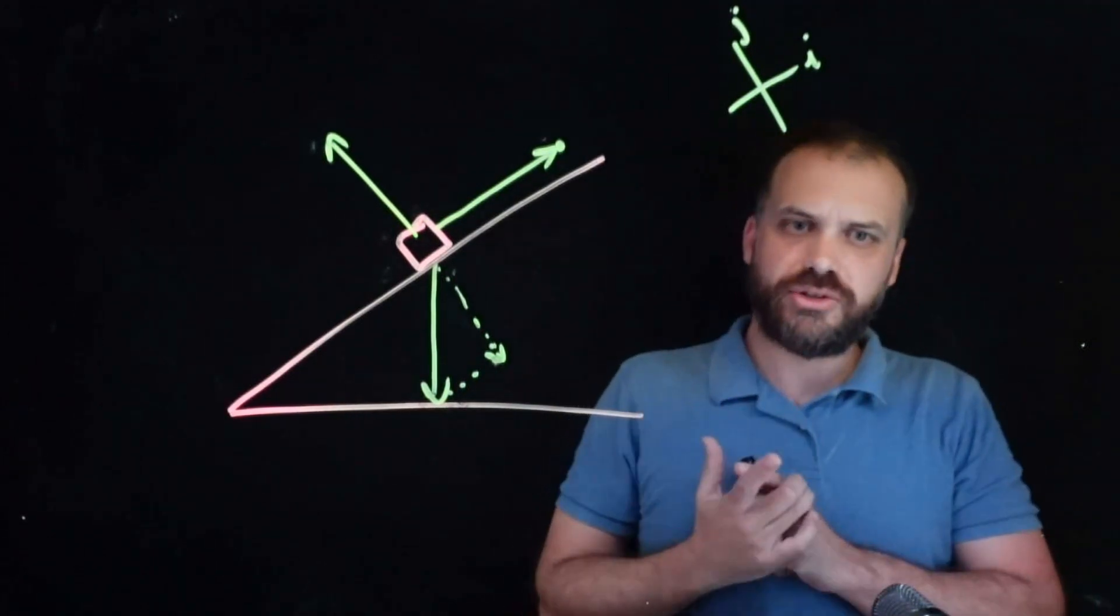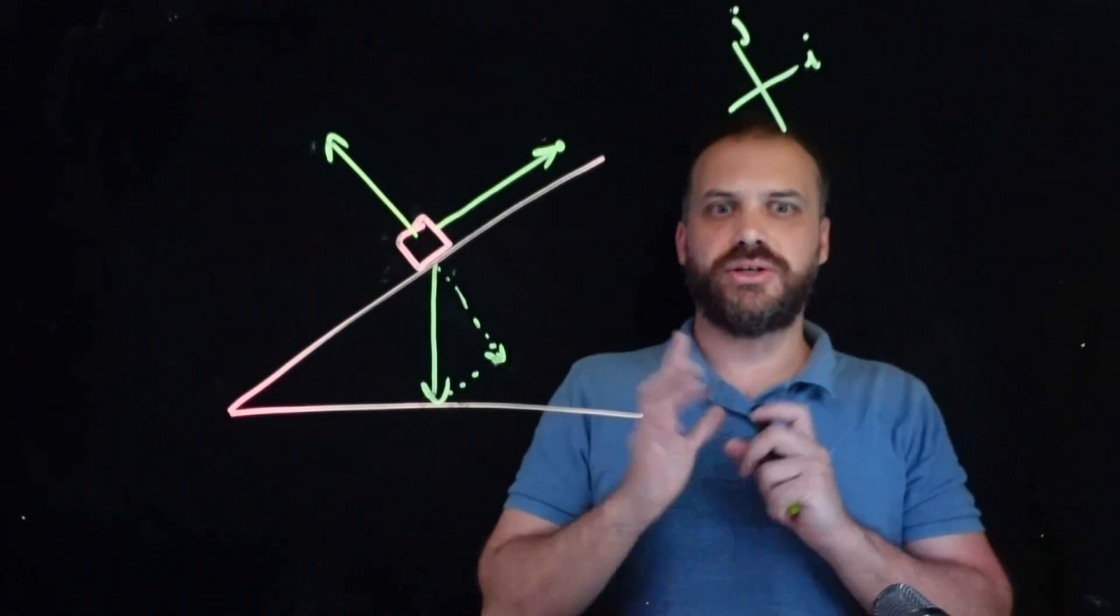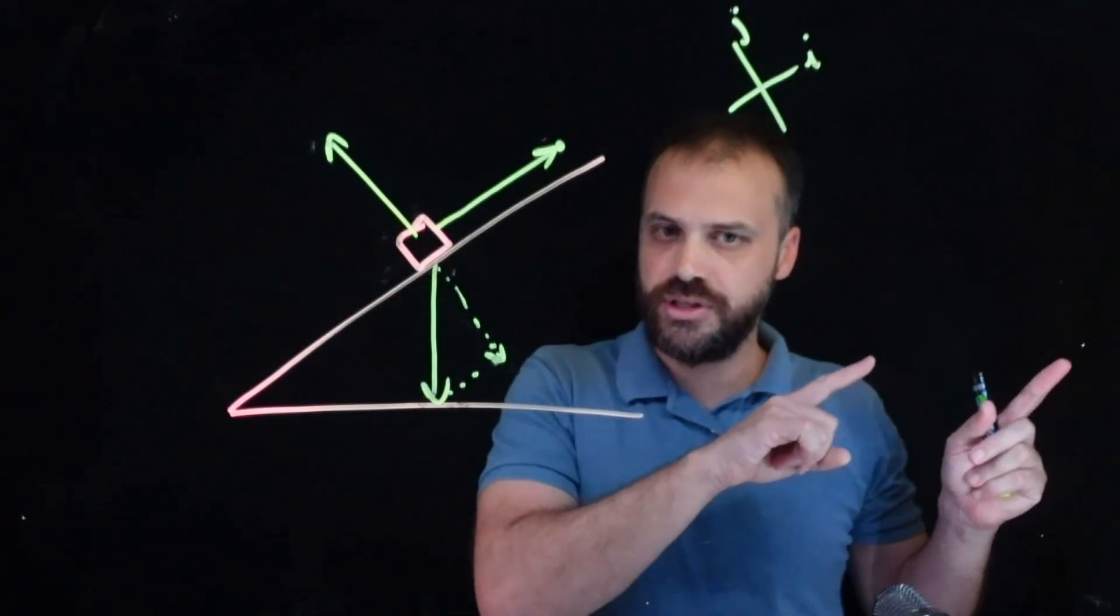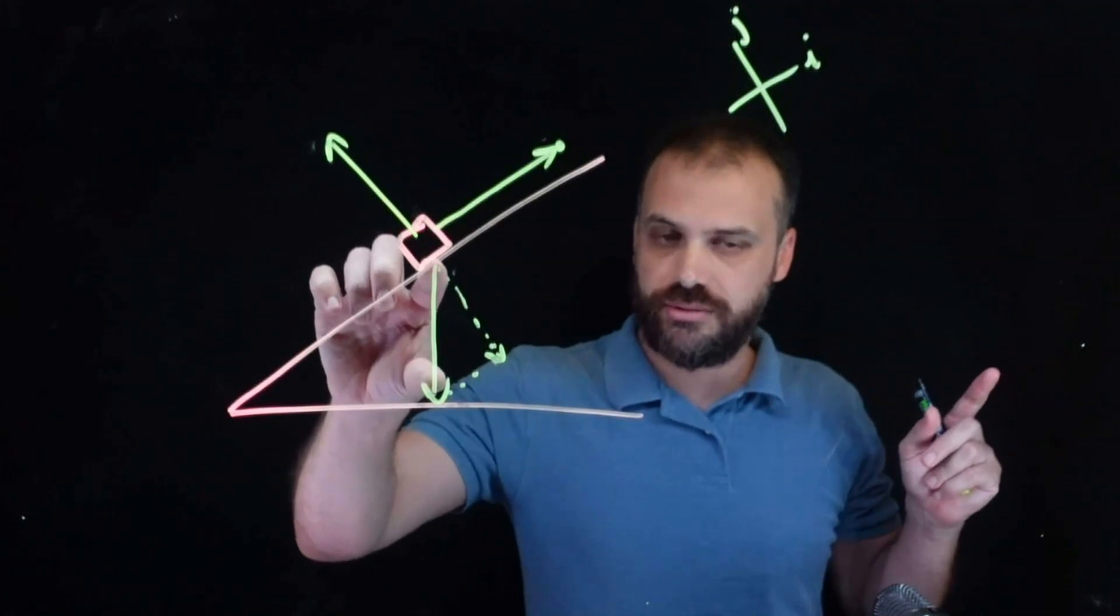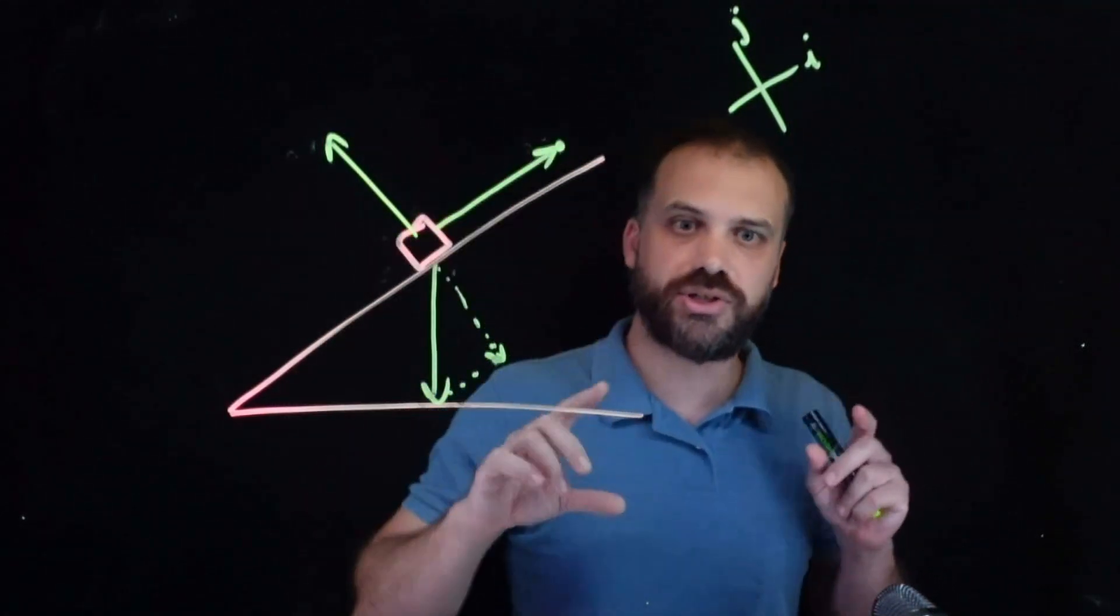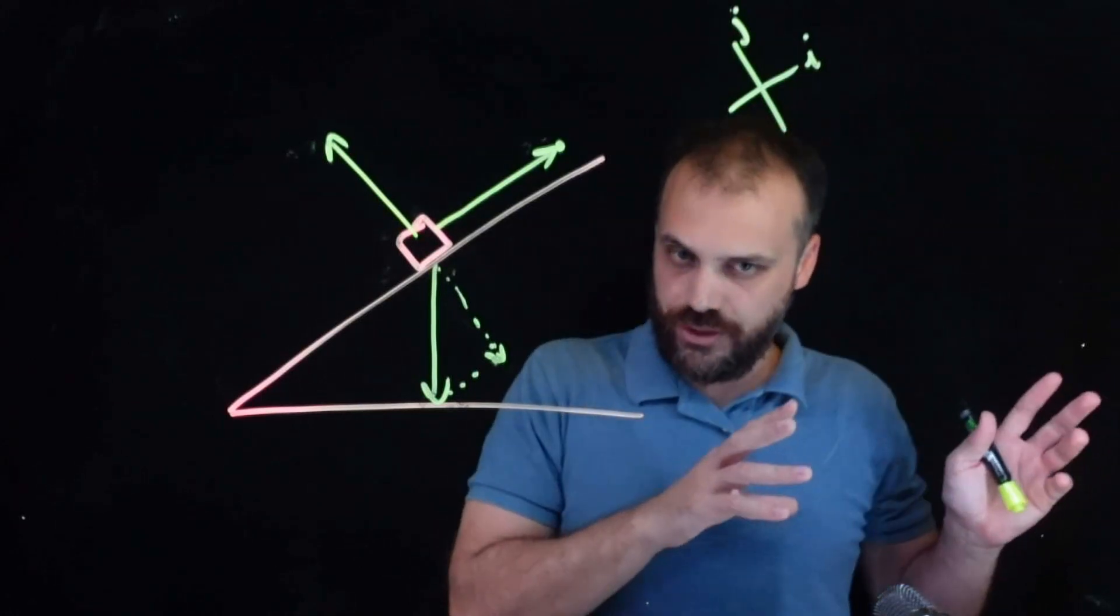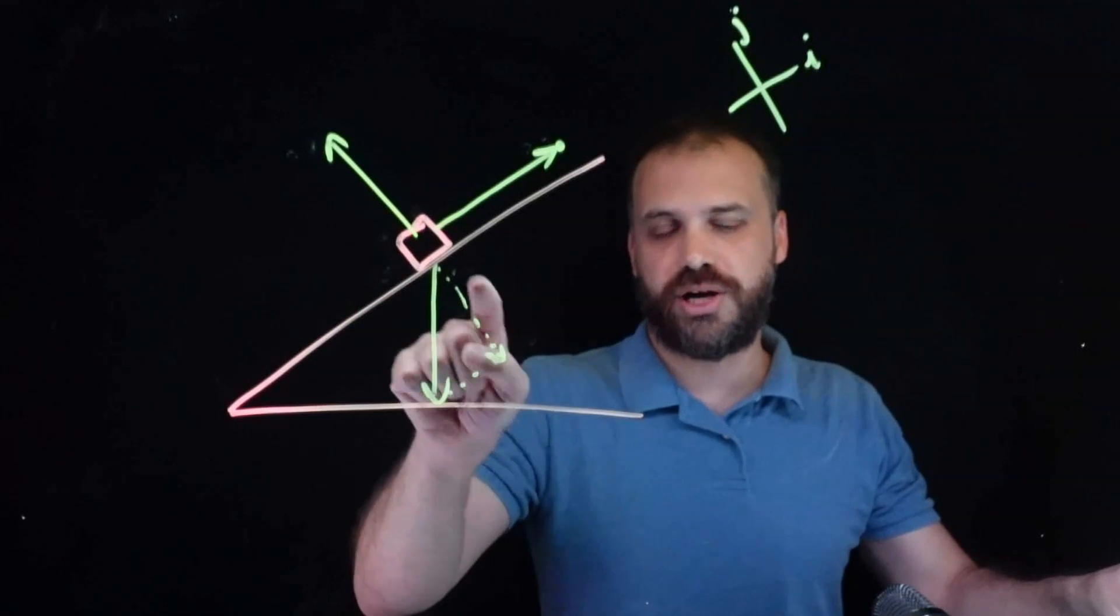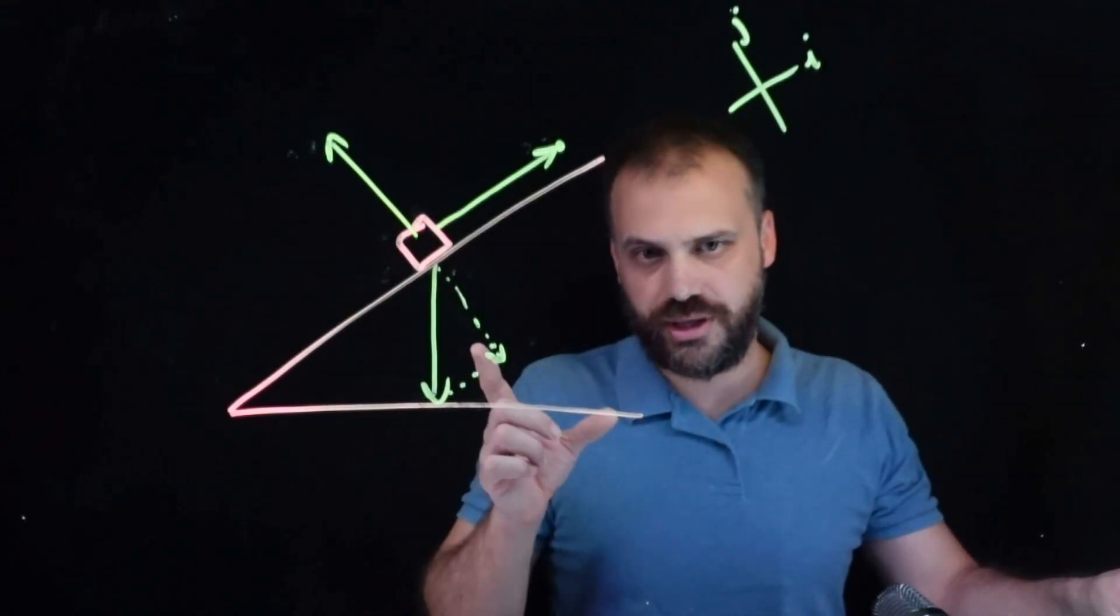And now you might be looking at this going, whoa, hang on a minute. Triangle of forces. We want three forces, but I've just created four. So what's going on? Well, this force, I've chosen to break it into two. I don't have to choose to do that.